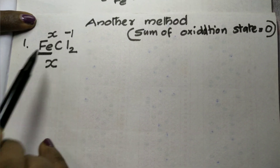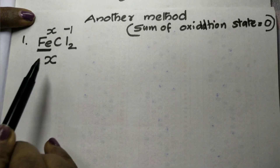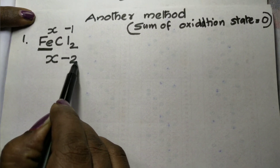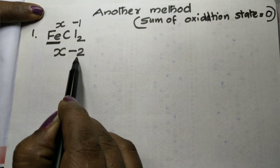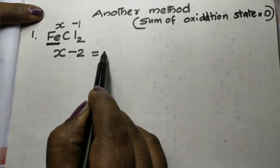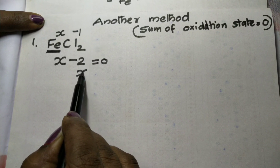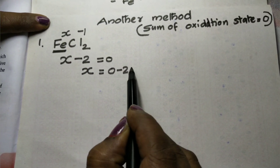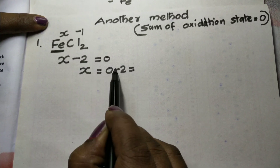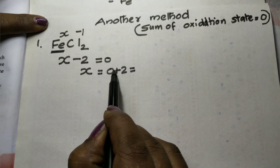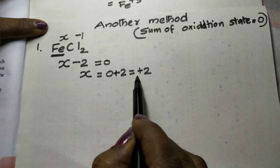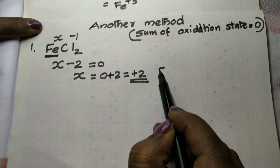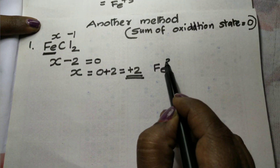To find the oxidation state using the sum method: x plus 2 times minus 1 equals zero. So minus 1 times 2 gives minus 2. Therefore x equals plus 2. The oxidation state is plus 2, symbol Fe²⁺.